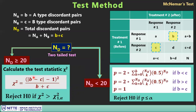This formula with the '−1' term is a modified version incorporating Yates' correction factor, which is commonly used in almost all statistical software today.